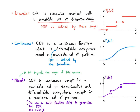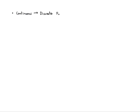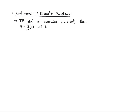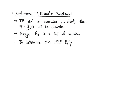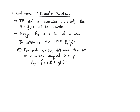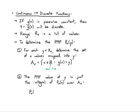For continuous to discrete: if g(X) is a piecewise constant function, then Y = g(X) will be a discrete random variable. To find the PMF of Y, for each value y take the set A_y — the set of x in the real line for which g(x) = y — and the PMF value at y is obtained by integrating the PDF of X over A_y.